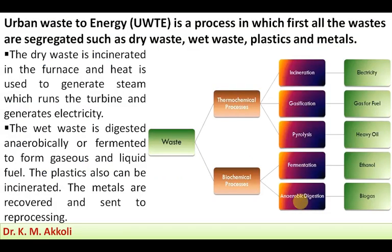In the urban waste to energy process, first all waste is segregated into categories such as dry waste, wet waste, plastics, and metals. These are then converted using particular technologies and methods to produce energy. The dry waste is incinerated in a furnace, and the heat is used to generate steam which runs a turbine to generate electricity.